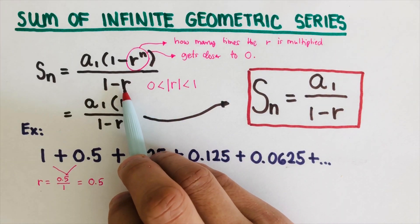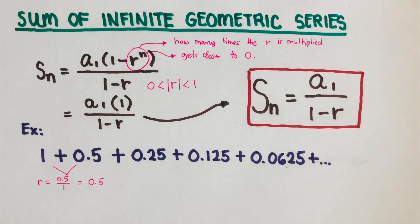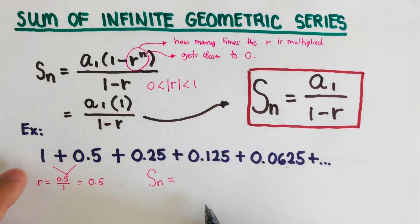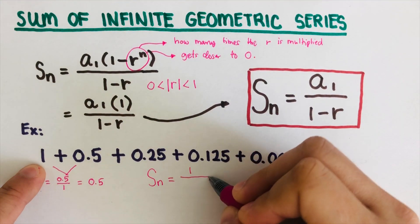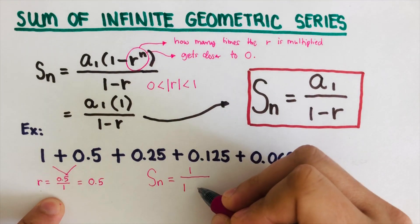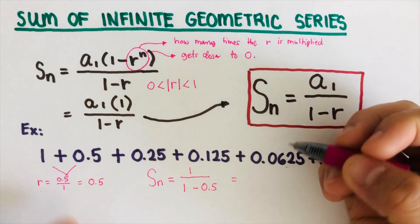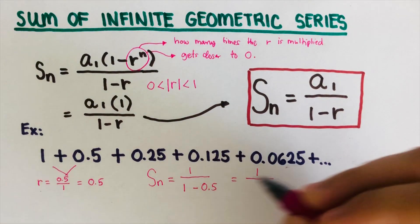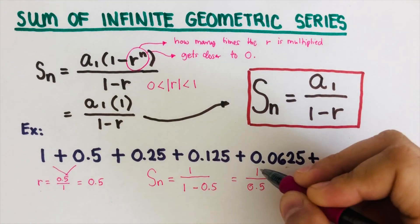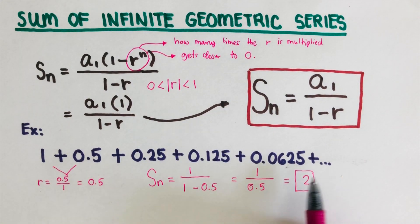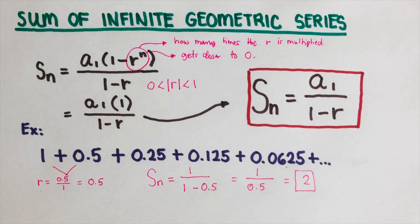Let's apply this to our example. S sub n equals a sub 1 over (1 minus r), so that is 1 over (1 minus 0.5). One minus 0.5 is 0.5, and 1 divided by 0.5 is 2. So the sum of this infinite geometric series, adding everything all the way to infinity, is 2.